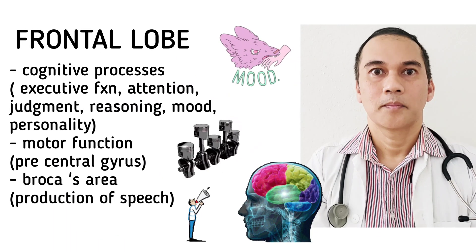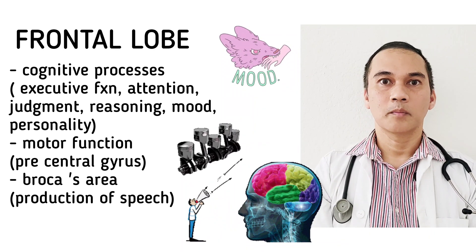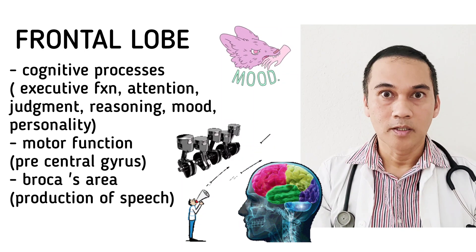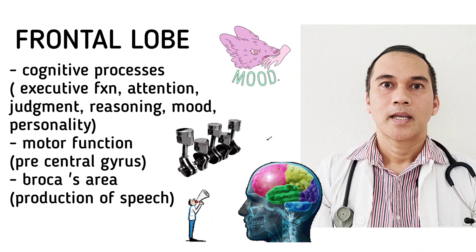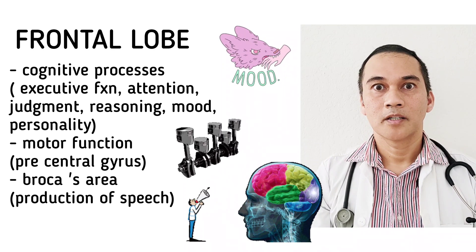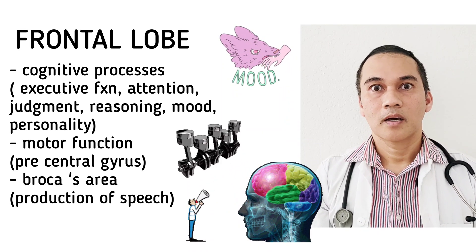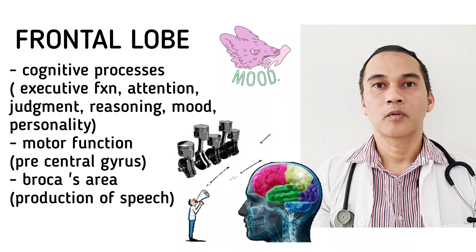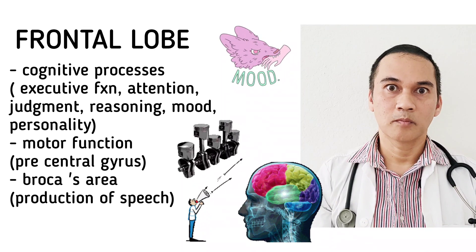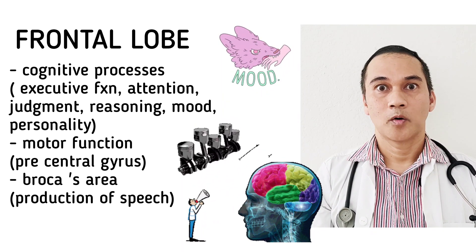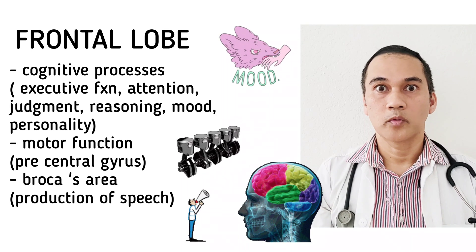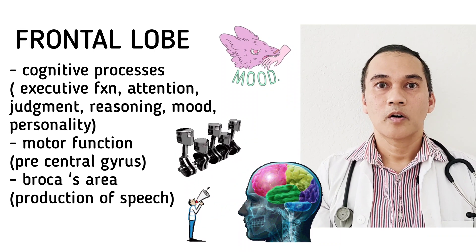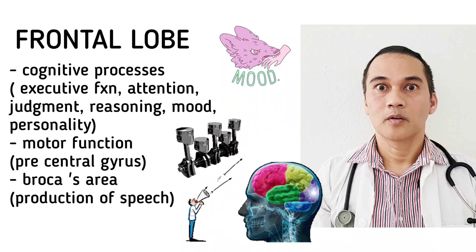The frontal lobe, which is pink, is responsible for cognitive processes: attention, judgment, reasoning, mood, personality, and behavior. It is also responsible for motor functions because the precentral gyrus, which is part of the frontal lobe, is responsible for all voluntary movements. If you initiate a movement, it starts with the primary motor cortex, which is in the frontal lobe. Also, Broca's area is found in the frontal lobe, and it is responsible for the production of speech.